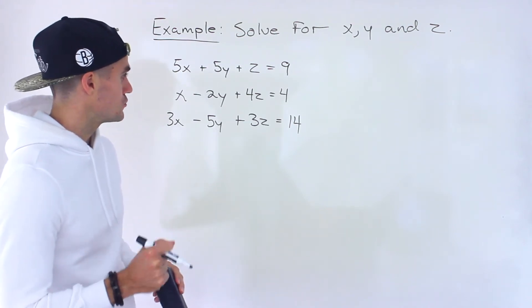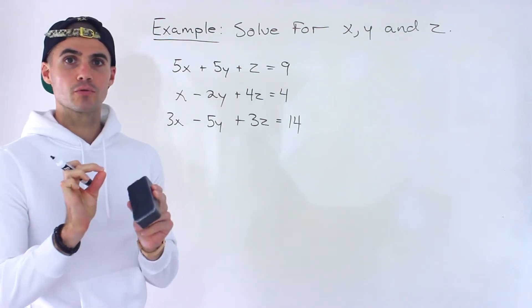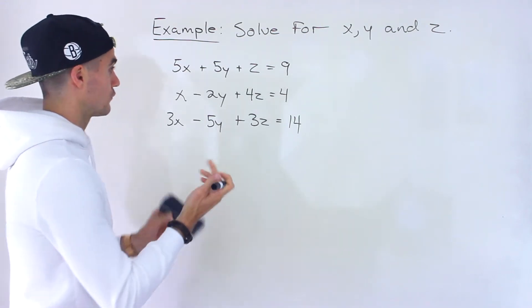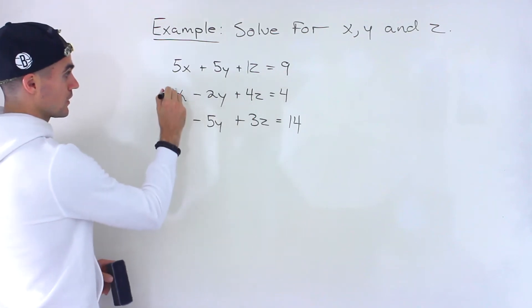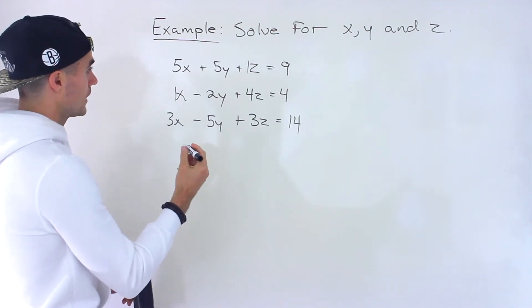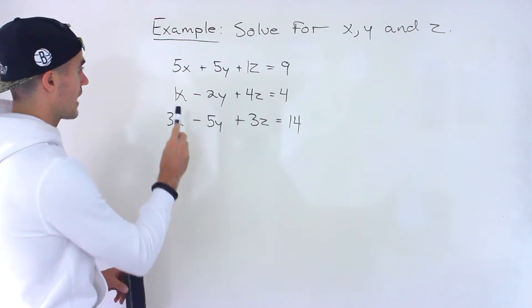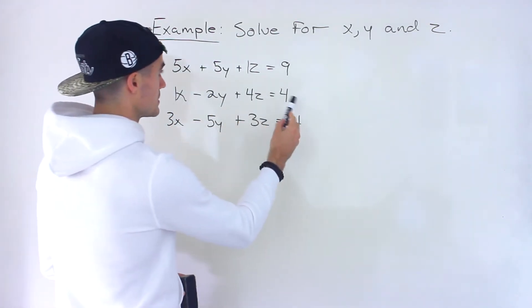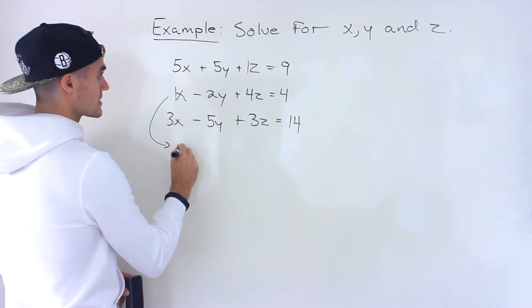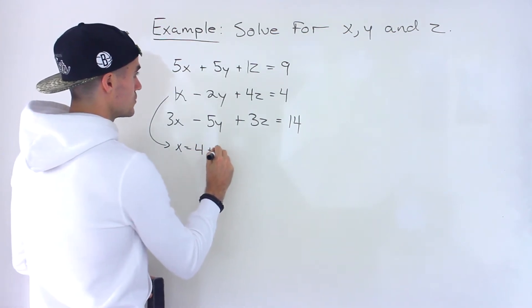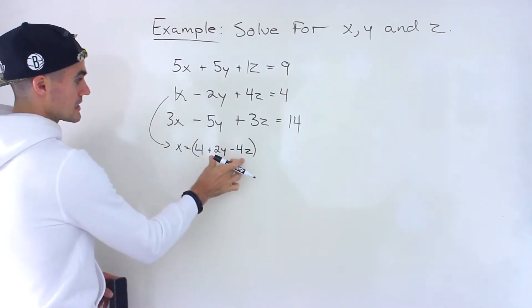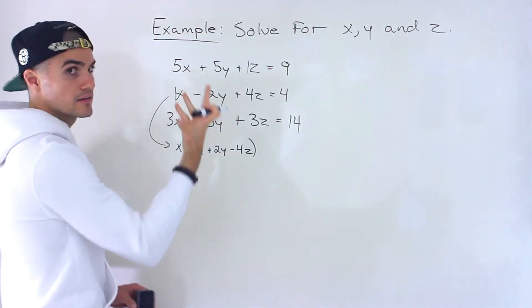Personally I'm going to use substitution. The first thing I look for is any variable that has a leading coefficient of one or negative one. Notice we have a z with a coefficient of one and an x with a coefficient of one, so you can isolate either. I'm going to isolate for x, bringing the negative 2y and the 4z over, so x equals 4 plus 2y minus 4z.